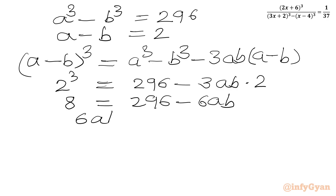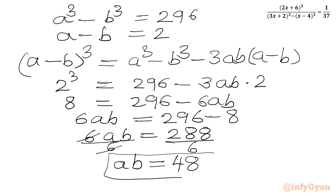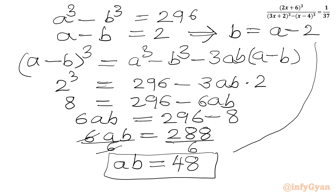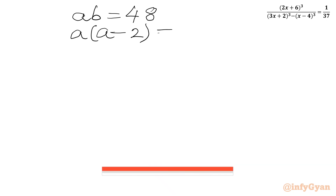Rearranging, 6ab = 296 - 8 = 288, so ab = 48. From equation 2, b = a - 2. Substituting into ab = 48, we get a(a-2) = 48.